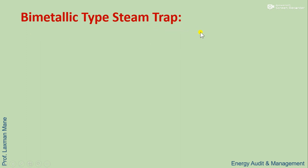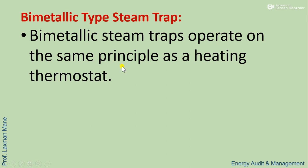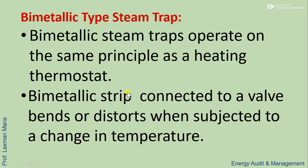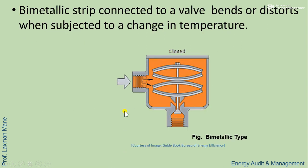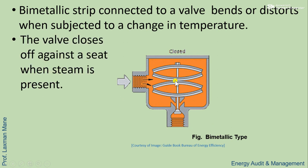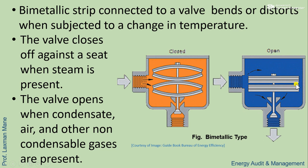Bimetallic type steam trap: the bimetallic steam trap operates on the same principle as a heating thermostat. It is connected to a valve that bends or distorts when subjected to a change in temperature. The valve closes against a seat when steam is present; the valve opens when condensate, air, or other non-condensable gases are present, releasing them from the system.